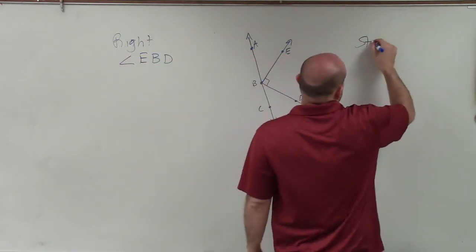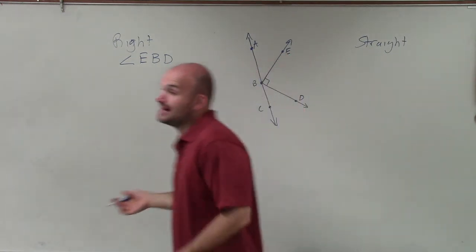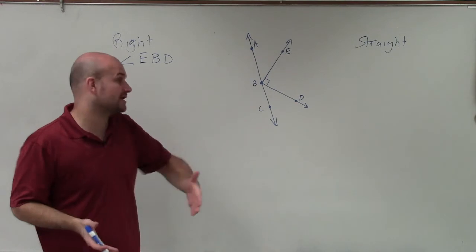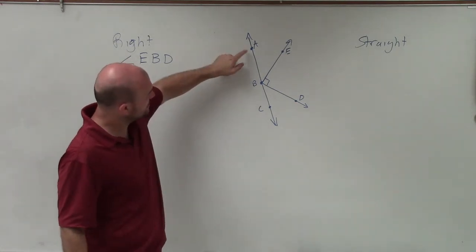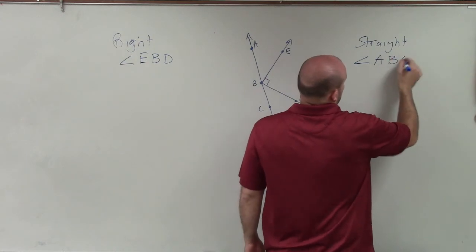The next angle that I'm going to look for is the straight angle. Remember, right angle is 90 degrees. The straight angle is going to create a straight line, which you can see is angle ABC.